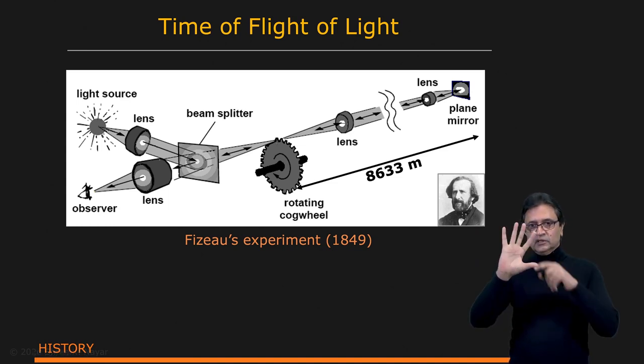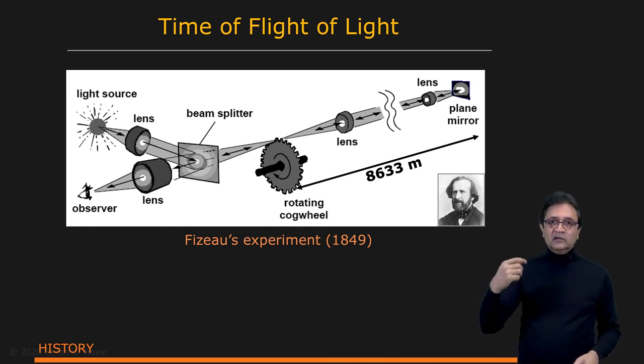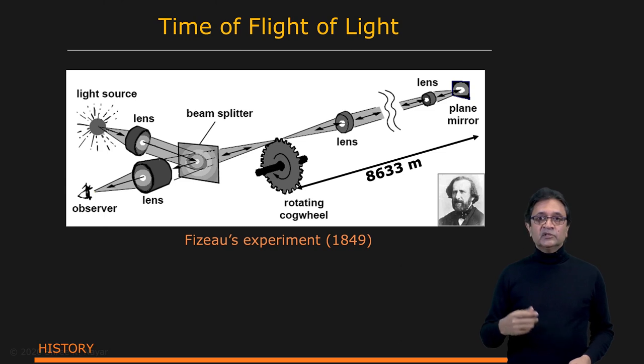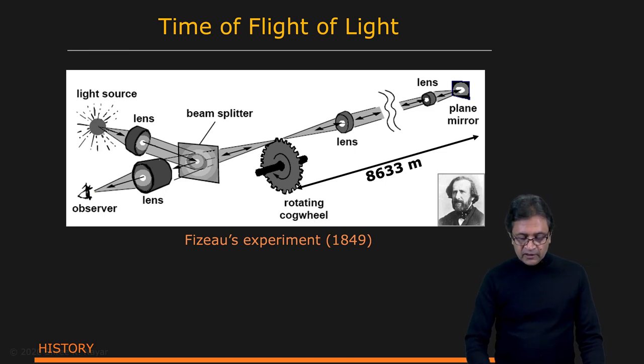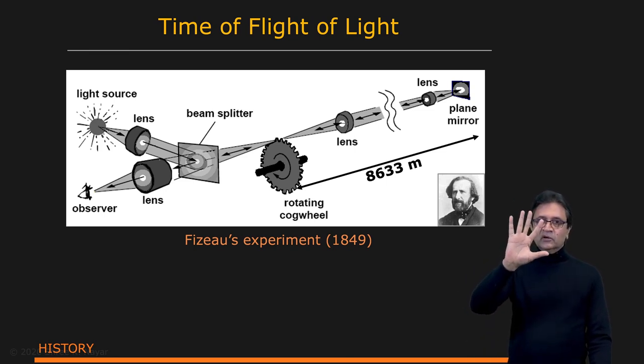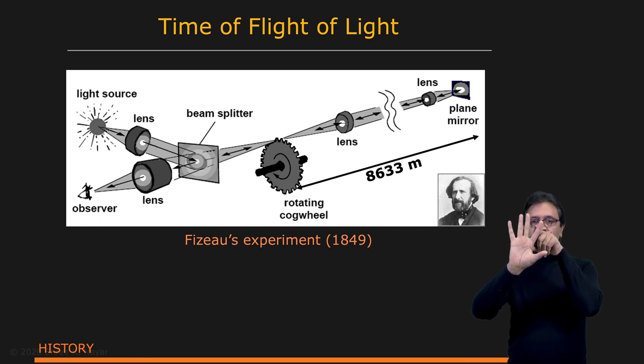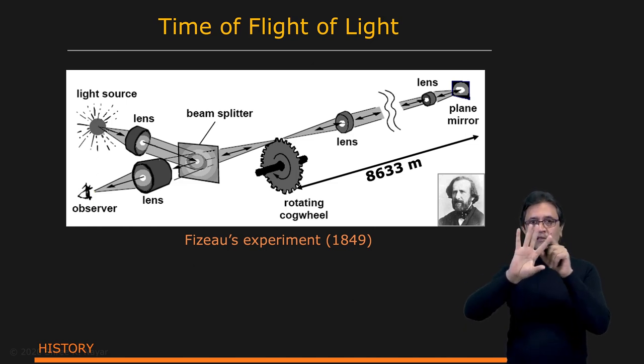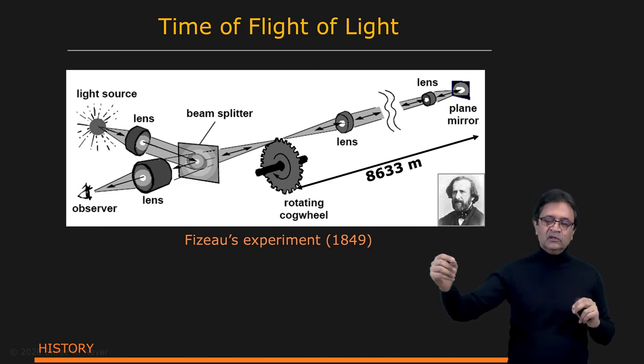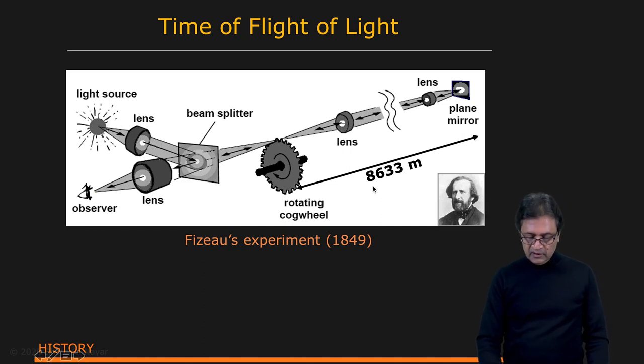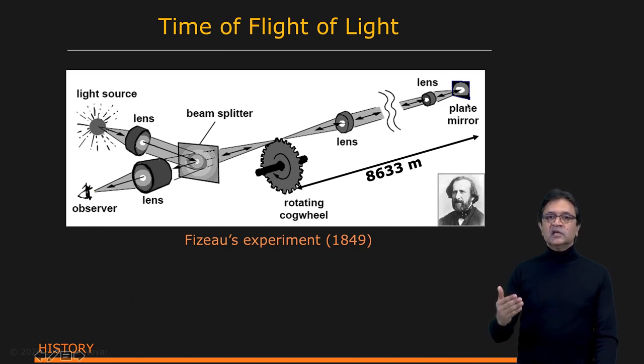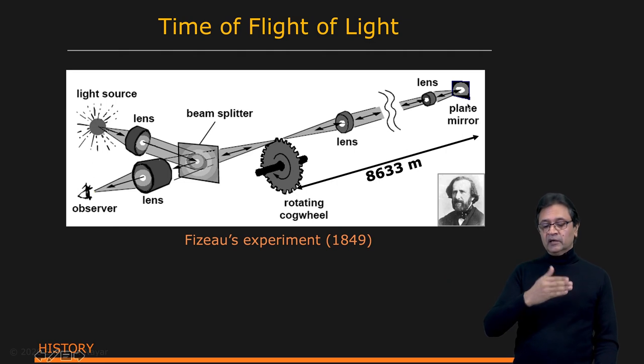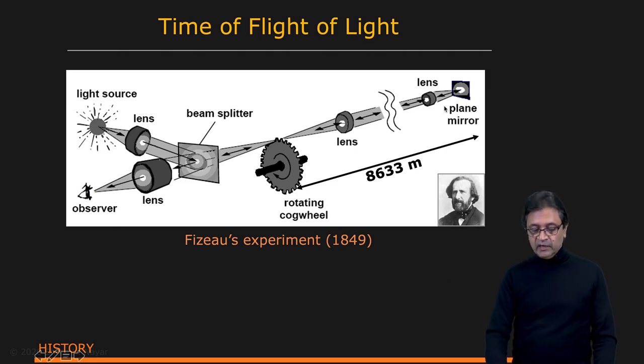The cog wheel can be rotated, and Fizeau was able to control the speed of rotation. His idea was that if you rotate the cog wheel, a packet of light gets through one of these teeth as it rotates. Then it's going to go this long distance—8,633 meters. It travels this distance, and at the other end he has a planar mirror that reflects this light back. So then it travels back through the same system.